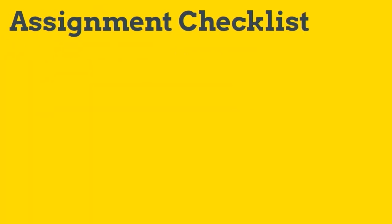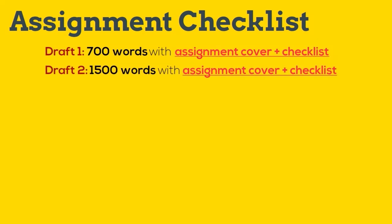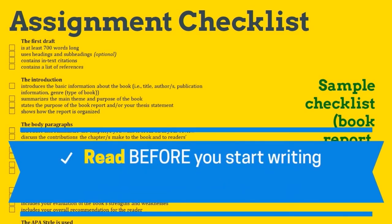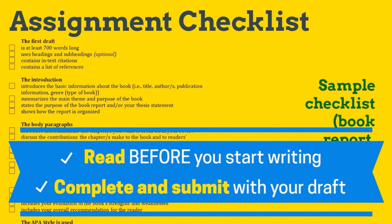We asked you to submit a cover page and a checklist with your drafts. So what is a checklist? An assignment checklist is a list of items that you're expected to include in your assignment drafts. It is a useful tool developed by your subject teacher and the ELC for your reference. What you should do is read it before you start writing to get a general idea of what you're expected to write, use it while writing to ensure you're addressing your assignment requirements, then complete and submit it with your draft.